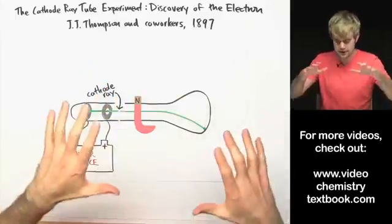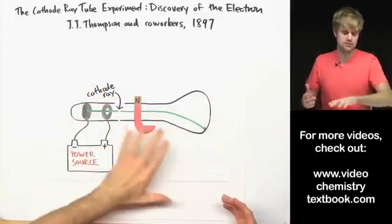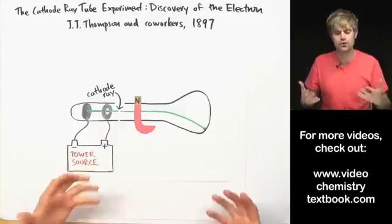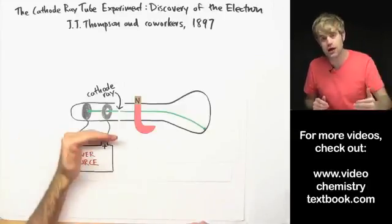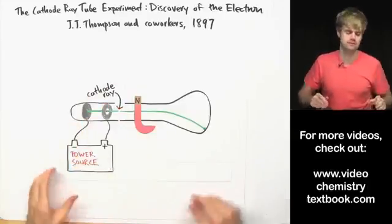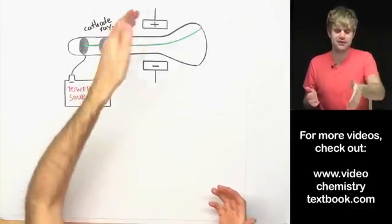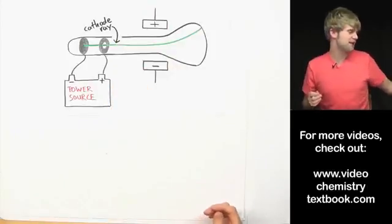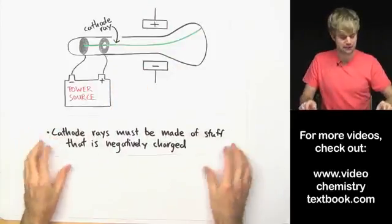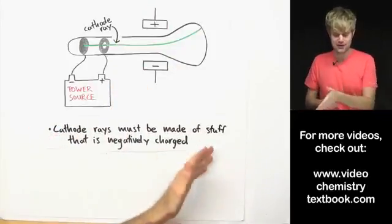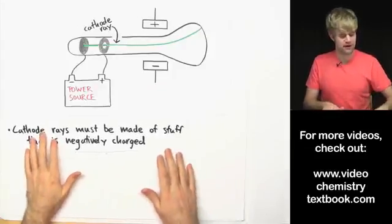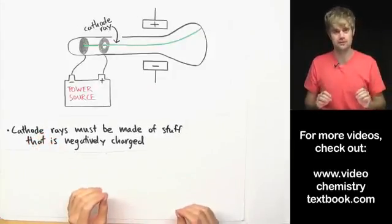So he takes the data that he gets from these experiments and he's able to draw a few important conclusions about cathode rays and what makes up atoms. So based on the outcomes of the experiments with the charge plates and the magnet, Thompson is able to conclude that cathode rays must be made of stuff that is negatively charged.